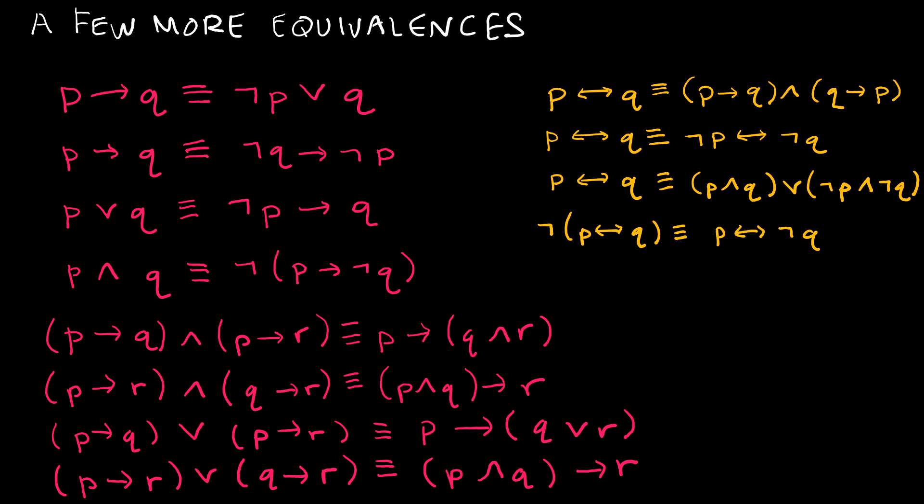All of the ones I've written in yellow, which there are only four, involve biconditional statements or the if and only if statements. So if you're going to use these in a logical equivalence proof that we're going to go over in a little bit, you're just going to have to write out what the law says as opposed to writing the name of the law, which is what we'll do for any of the ones that I've shown you on the previous slides.